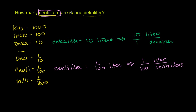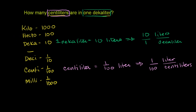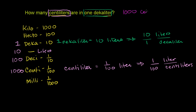We want to convert 1 decaliter into centiliters. Looking at the chart: 1 decaliter is the same as 10 liters. Then 10 liters is going to be 100 deciliters, because each liter is 10 deciliters and you have 10 of them — every time you go down, you multiply by a factor of 10. And 100 deciliters, with each worth 10 centiliters, gives 1,000 centiliters. So 1 decaliter is 1,000 centiliters.